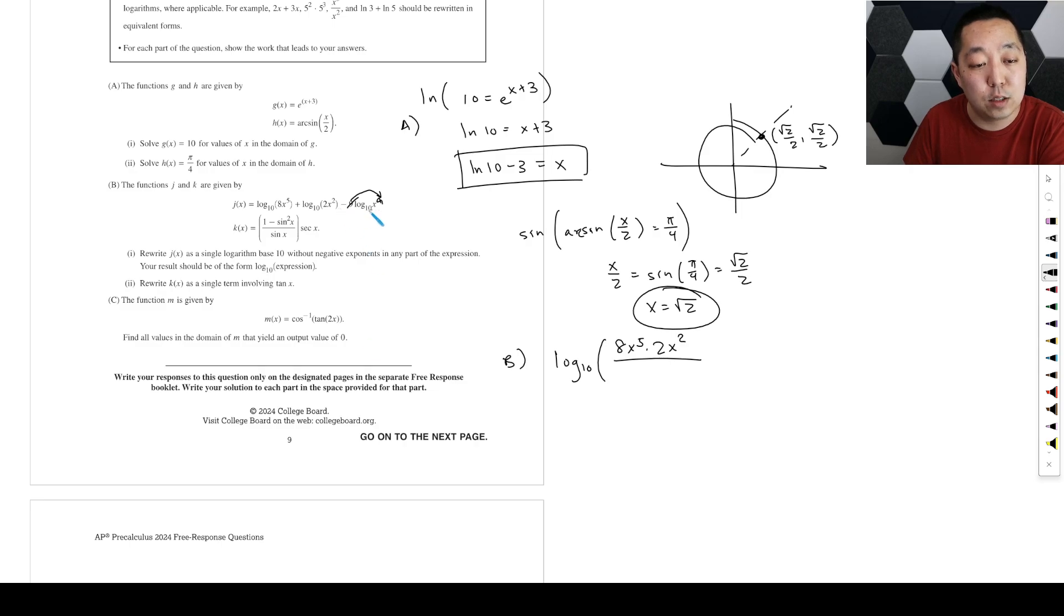So then it's minus log 10x to the 9th, so then I can divide by x to the 9th there. So that's me combining them together. That's log 10. And then 8 times 2 is 16, this is x to the 7th over x to the 9th. And then you can cancel those or subtract them, but you'll just be left with x squared on the bottom. So log of 16 over x squared.